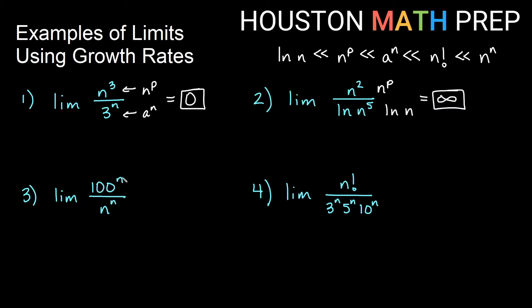For the limit of 100^n over n^n: 100 is a large but fixed base, so that's exponential growth on top, while n^n has both base and exponent growing — that's super exponential growth. Super exponential is faster, so the bottom grows much more quickly and this limit is zero. For n! over (3^n · 5^n · 10^n): the product of exponentials can be combined as 150^n. Even though 150 is a large base, factorial growth is still quicker than exponential growth, so the top wins and this limit is infinite — the sequence diverges.